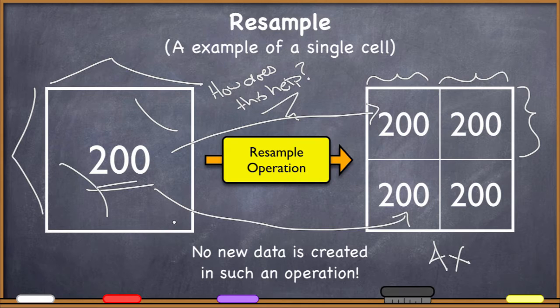So yes, sometimes software packages will let you do a resample operation in this way, but you have to remember that if the data was only created at a certain spatial resolution, that's the spatial resolution that you've got. You can't just manipulate the raster through a resample operation and get new data. It doesn't work like that.